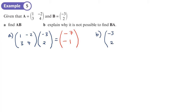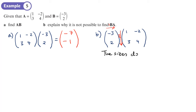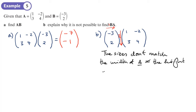If I write out B, as I go across I need to go down — but here I'm only going one across while needing two going down. The sizes of the matrices don't match. In other words, the width of B does not equal the height of A, so we can't multiply them together.